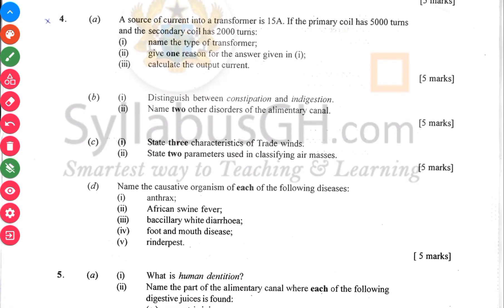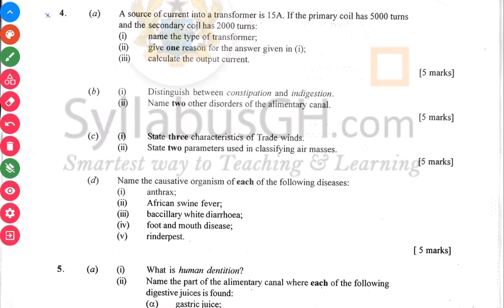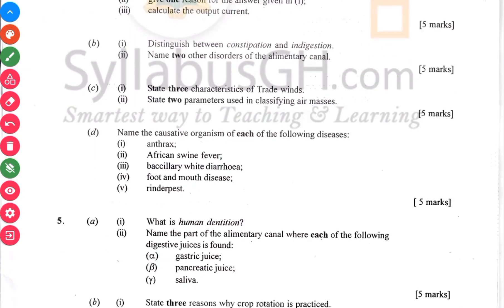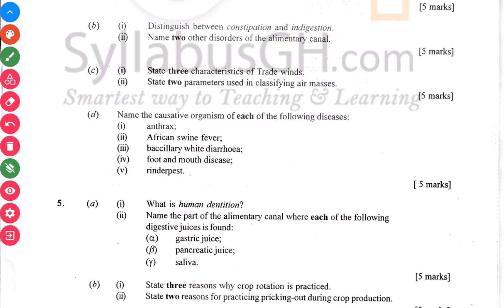Distinguish between constipation and indigestion, and name two other disorders in the alimentary canal. State three characteristics of trade winds, and state two parameters used to classify air masses.